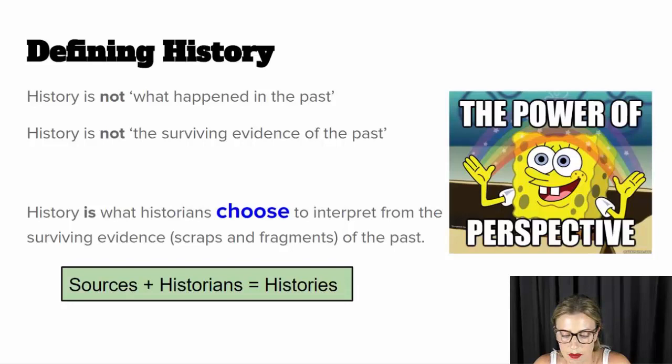Here's a quick definition of history. History is not what happened in the past. History is not just only concerned with the surviving evidence of the past. History is actually about the choices that historians make about what sources they're going to consider significant and how they're going to interpret those. So history is what historians choose to interpret from the surviving evidence, the scraps and fragments left behind from that historical period of the past. So a quick way to remember is sources plus historians equals histories.